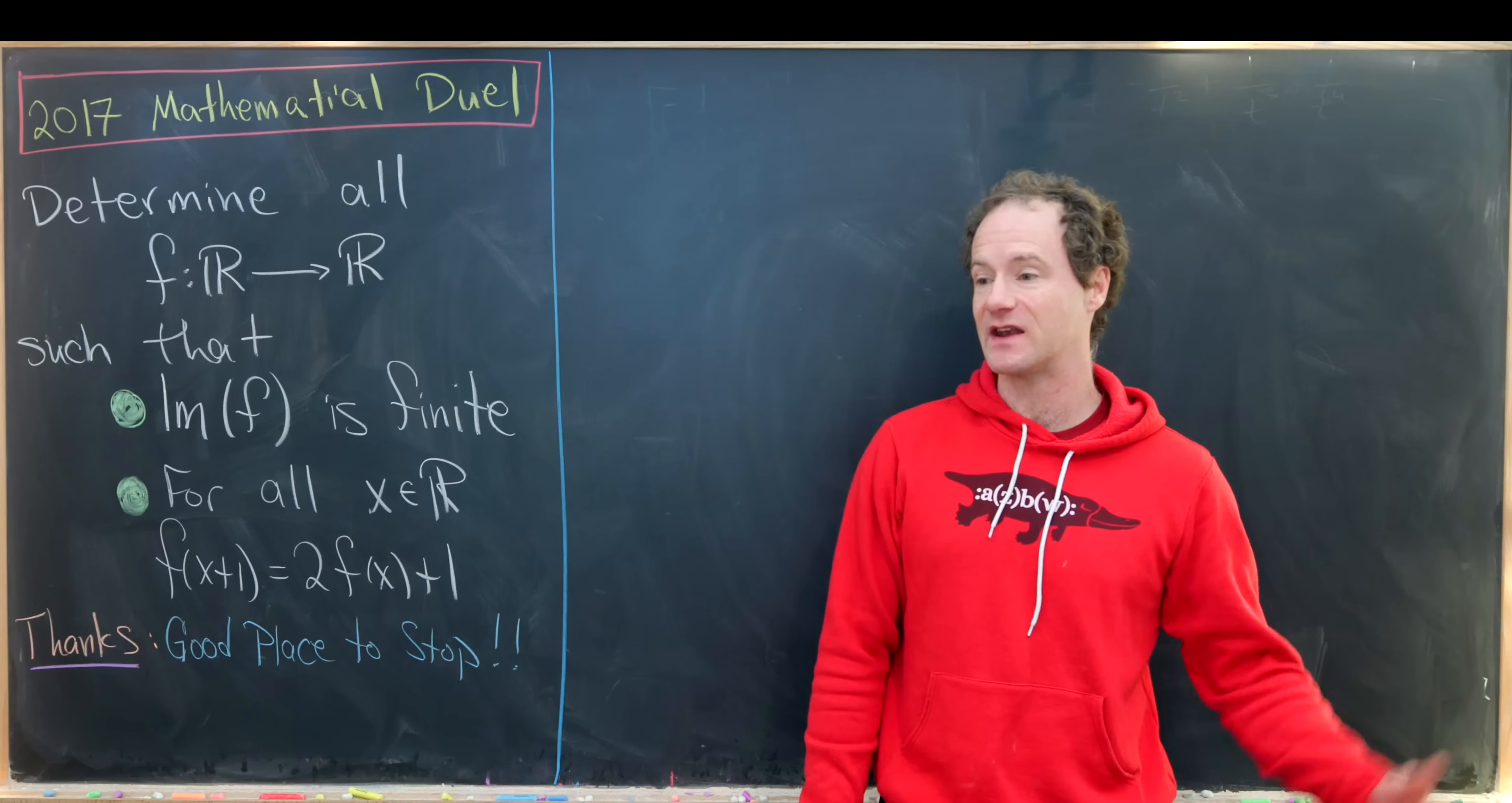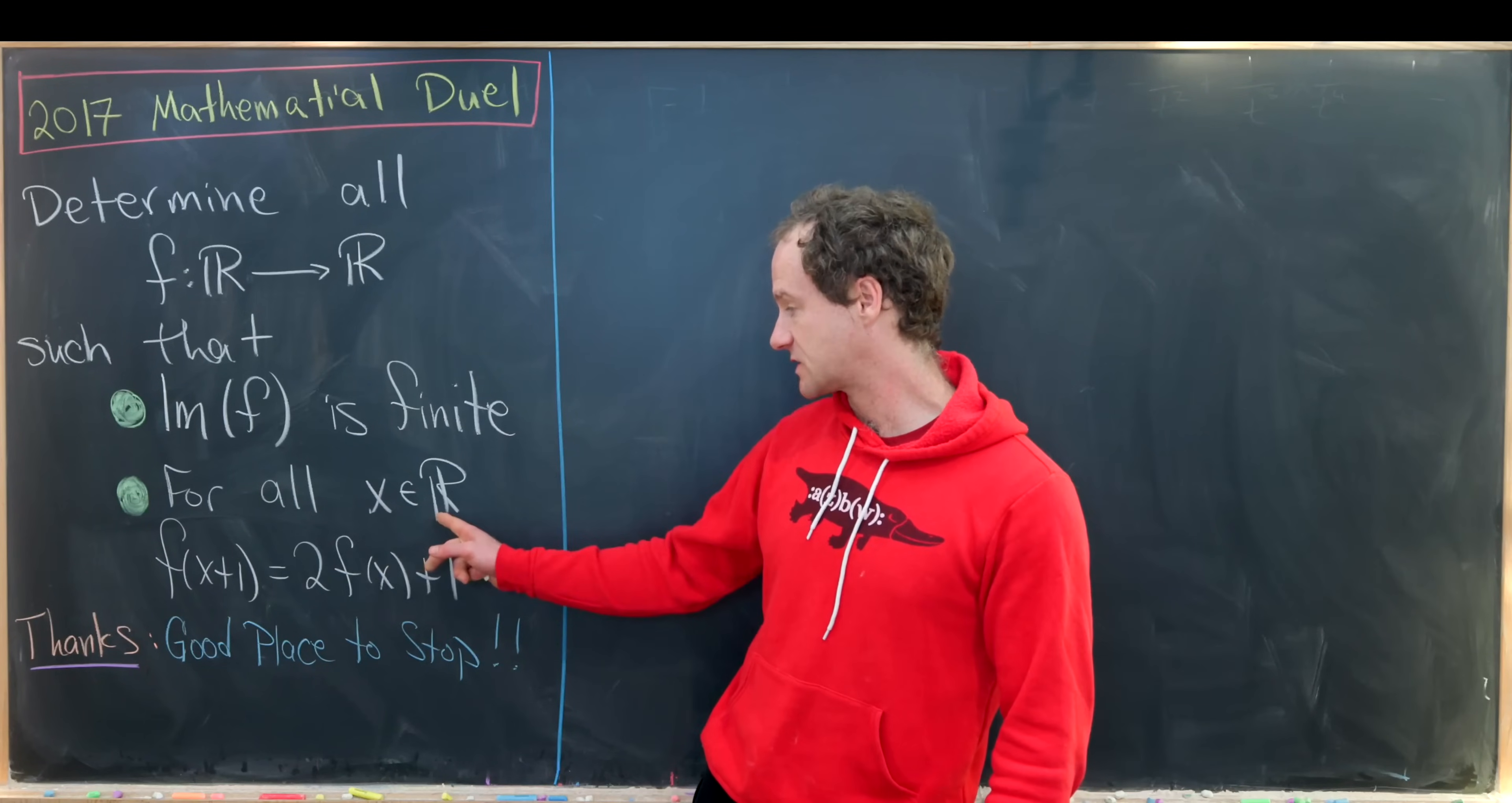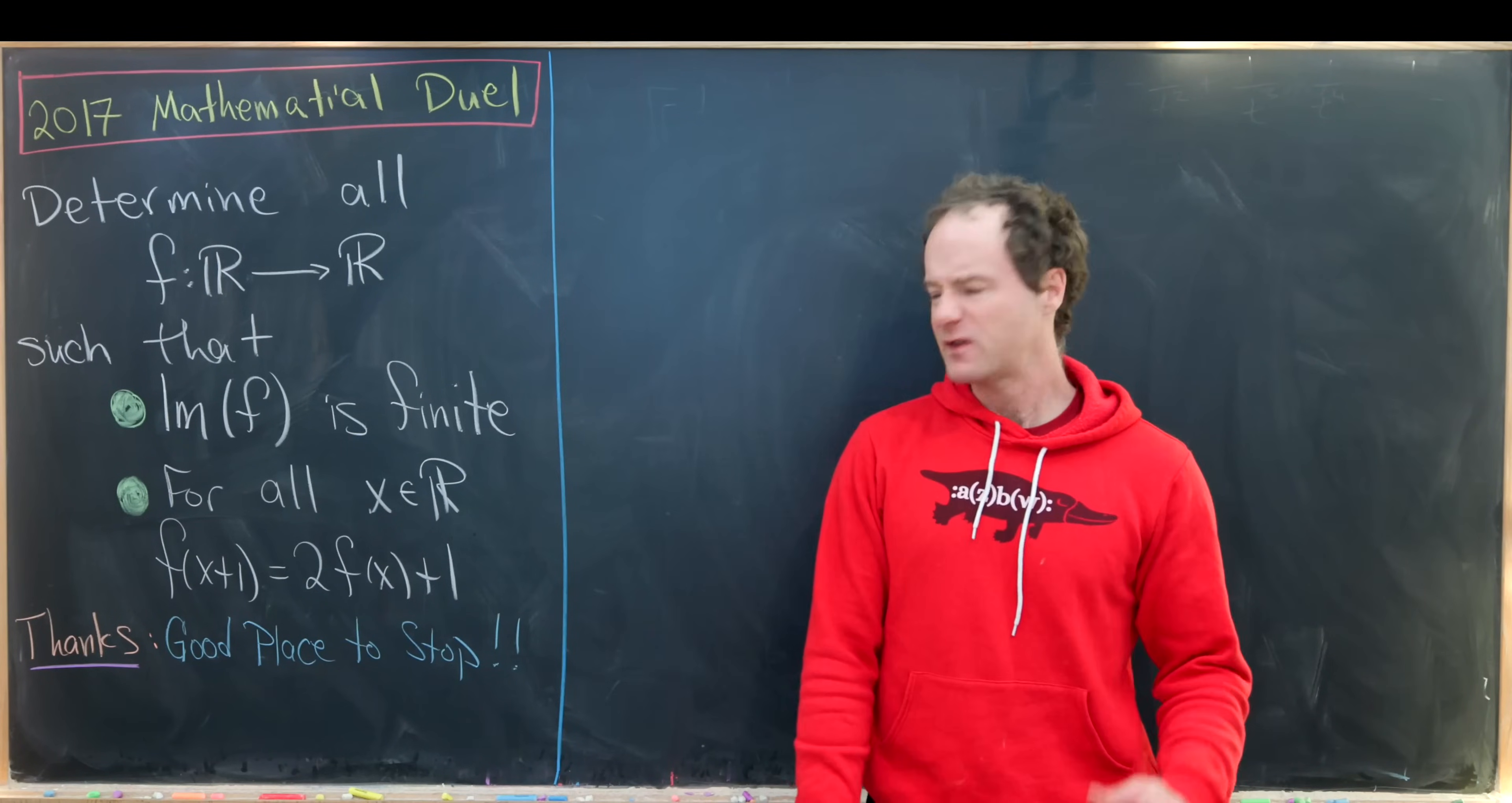takes on a finite number of values or has only a finite number of outputs. Then our second condition is for all x real numbers, f(x+1) equals 2 times f(x) plus 1.